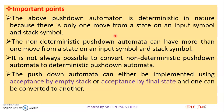In a deterministic pushdown automaton, in any given state we can create only a single move, or a single transition. That is the defining property of a deterministic pushdown automaton.